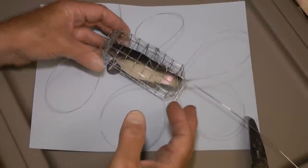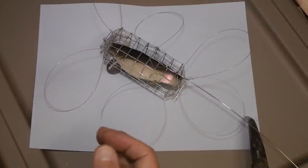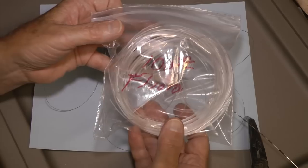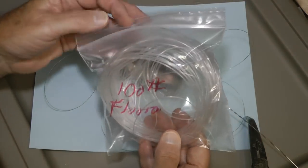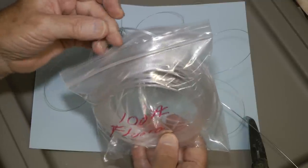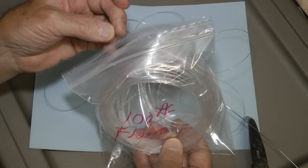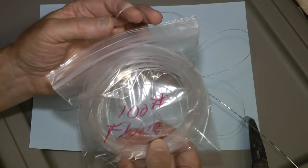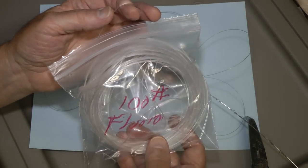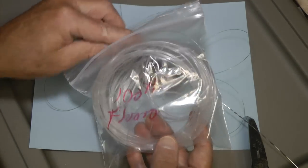I've seen these use 100 pound fluorocarbon, and for the big Dungeness crab out in California that might be okay, but it's going to take a lot of pull for the smaller blue crab of the Gulf Coast and Florida to get caught in that.